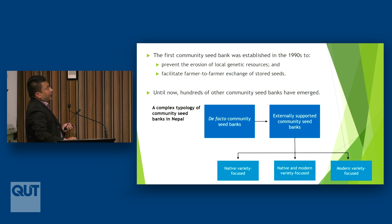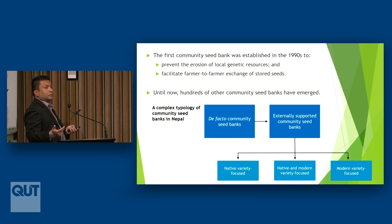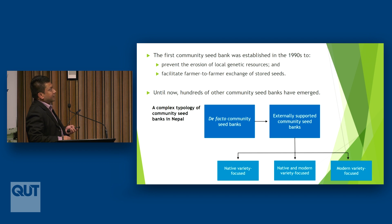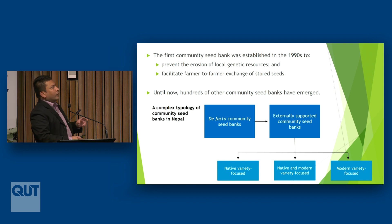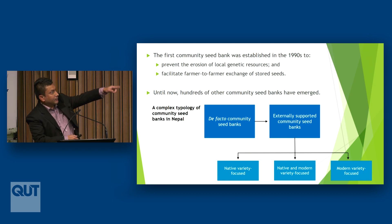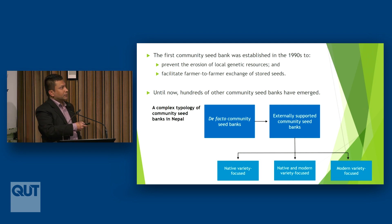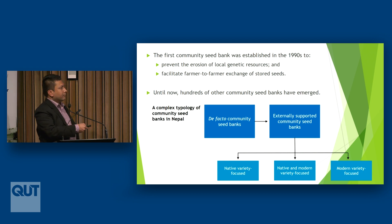In the case of Nepal, the first community seed bank was established in the 1990s, at around 2,200 meters above sea level. The major objectives were to prevent the erosion of local genetic resources and facilitate farmer-to-farmer exchange and sharing of seeds.